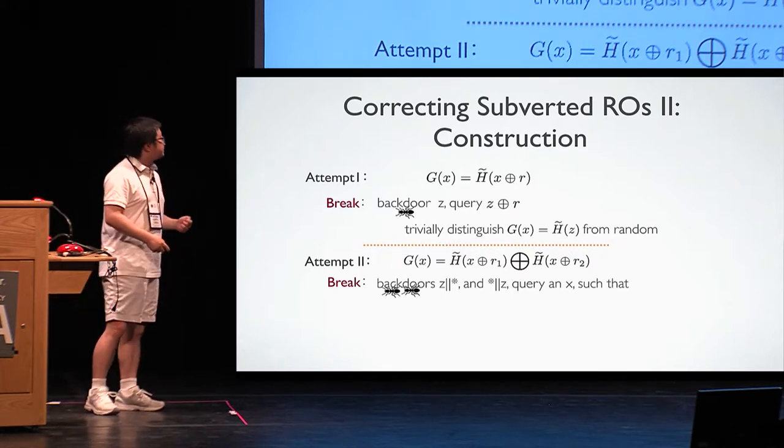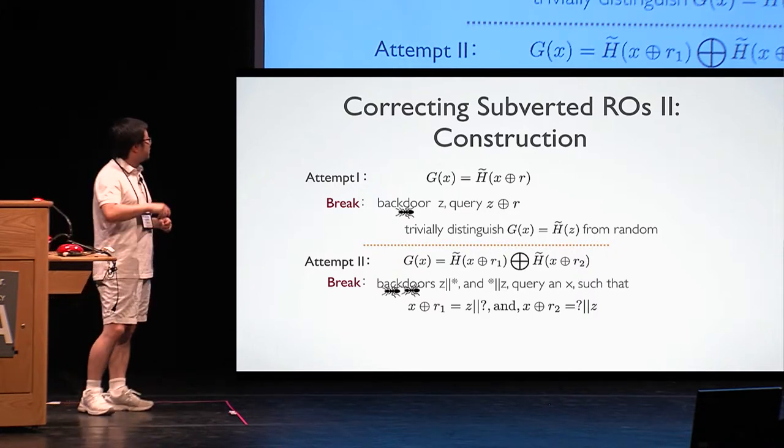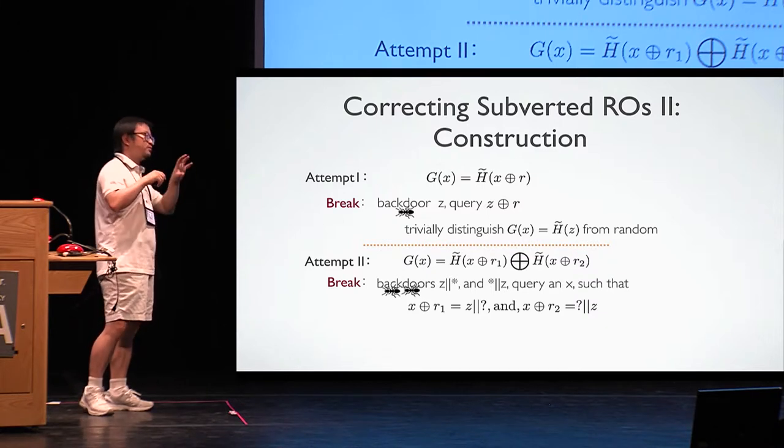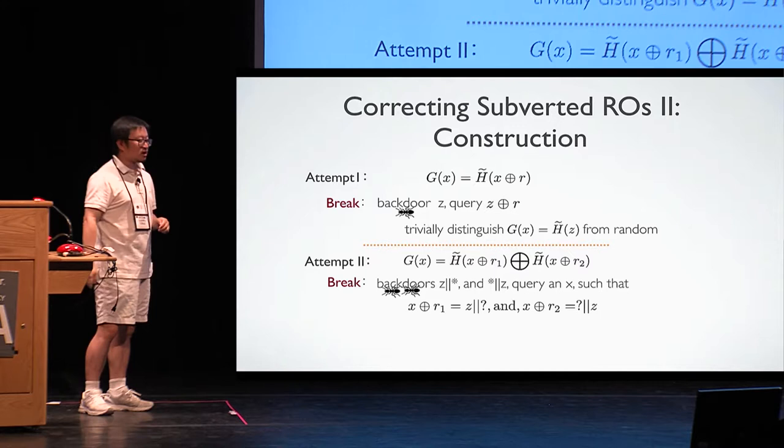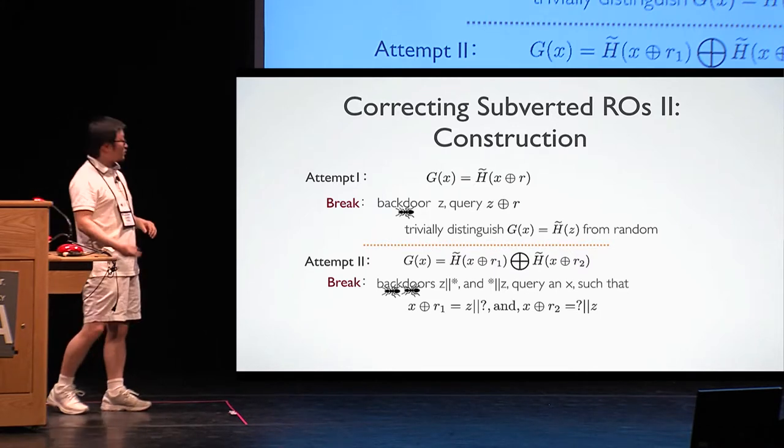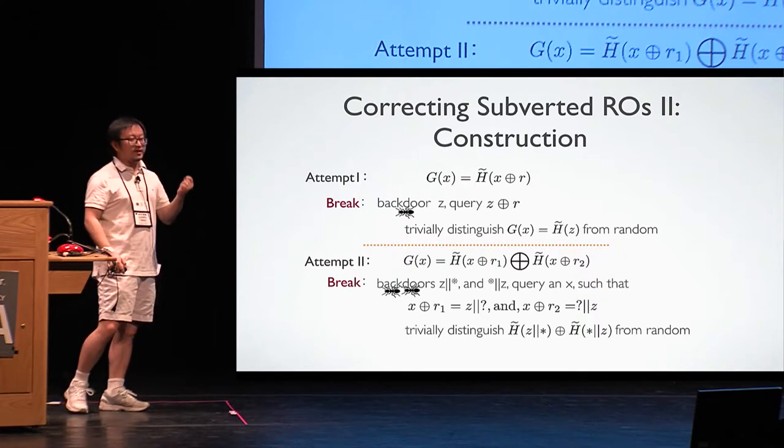So in order to break, the attacker can simply find the input, satisfy that when shifted with r1, it's going to map to the first type of backdoor, forced to the first part of the 40 inputs. And when shifted using r2, it's going to be forced back to the second type of backdoor. So in this way, again, he can trivially distinguish by finding such kind of input.